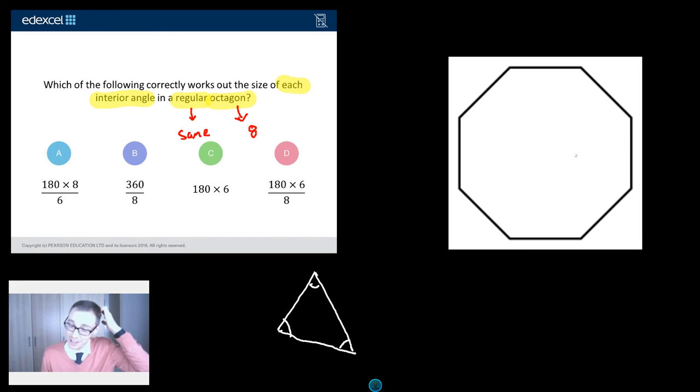Now, one option for answering this question is simply to just try and remember things. So, remember the total sum of interior angles in an octagon, remember it in a decagon, a nonagon, a hexagon. Then you've got to remember what each one is, the size of each interior angle, then exterior angle. Too many rules. I can't remember them all.